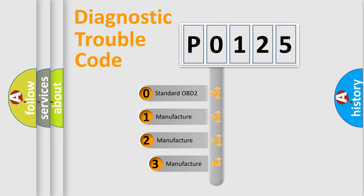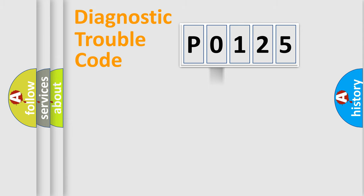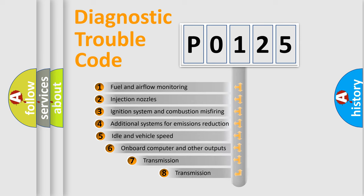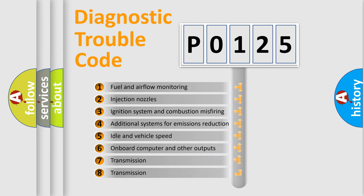If the second character is expressed as zero, it is a standardized error. In the case of numbers 1, 2, or 3, it is a more specific expression of the car-specific error.